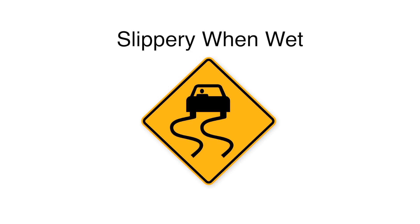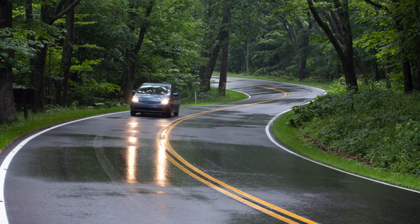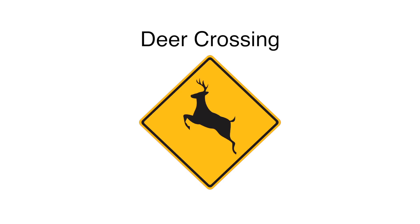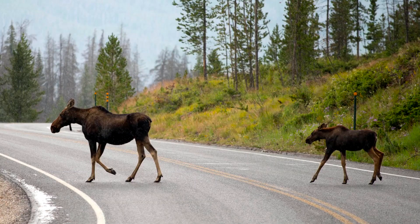Slippery when wet: The pavement is unusually slick when wet. Deer crossing: Deer often cross the road in this area — slow down if you see deer or other wildlife.